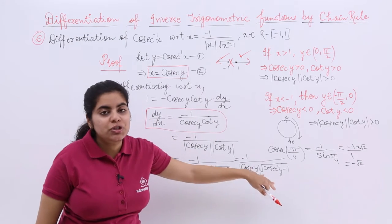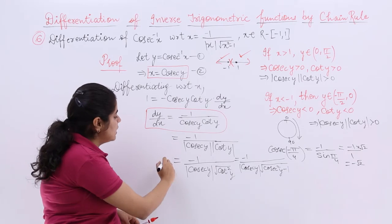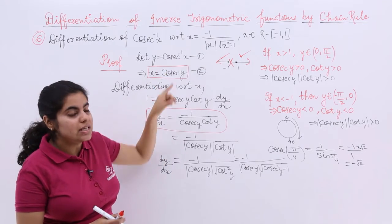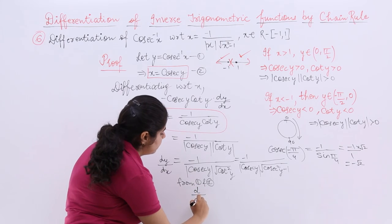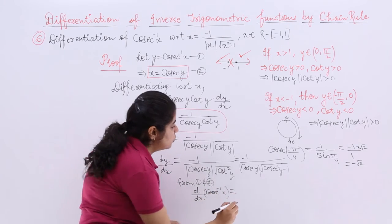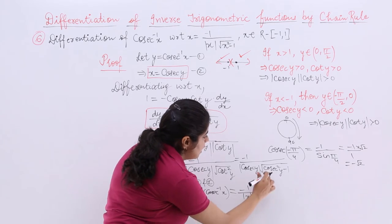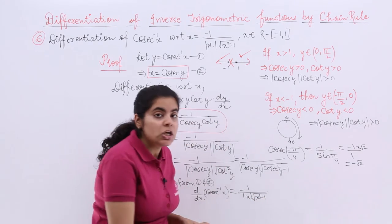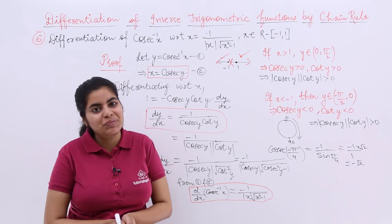Now substituting: wherever we have cosecant y, it becomes x; and cosecant squared y minus 1 becomes x squared minus 1. From equations 1 and 2, d by dx of cosecant inverse x equals minus 1 upon mod x times under root x squared minus 1. This is the formula for the differentiation of cosecant inverse x with respect to x, which we enclose in a box.